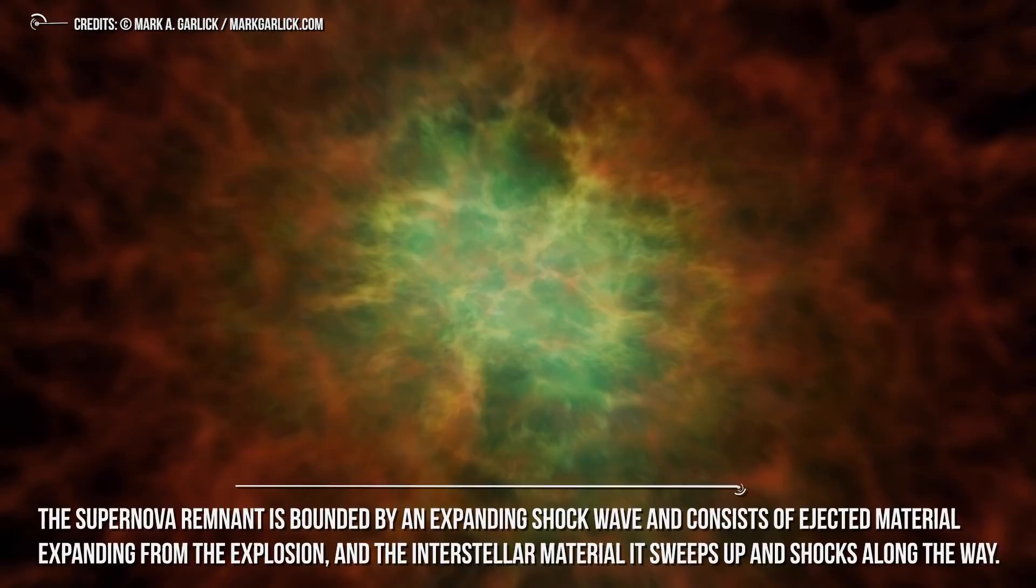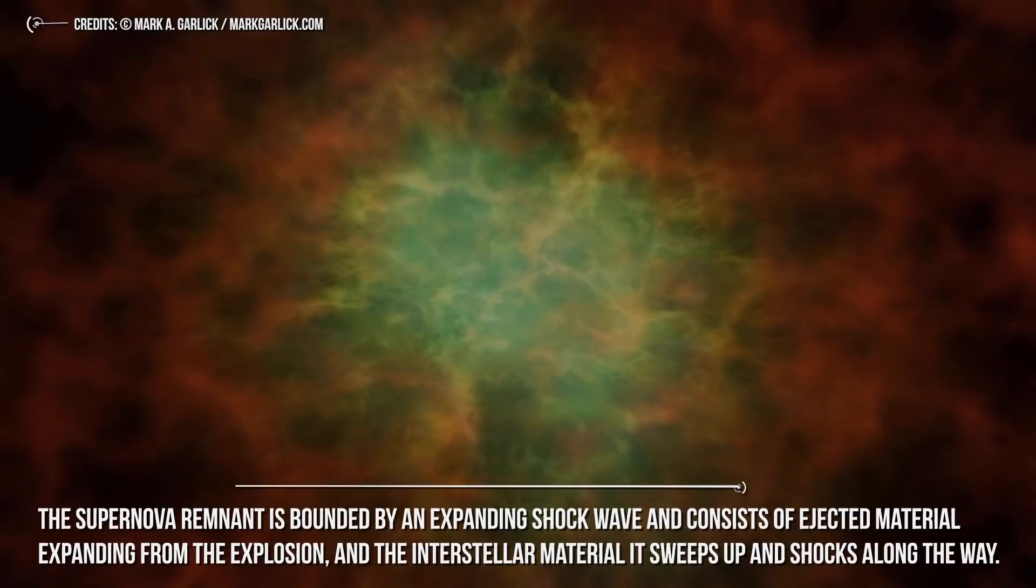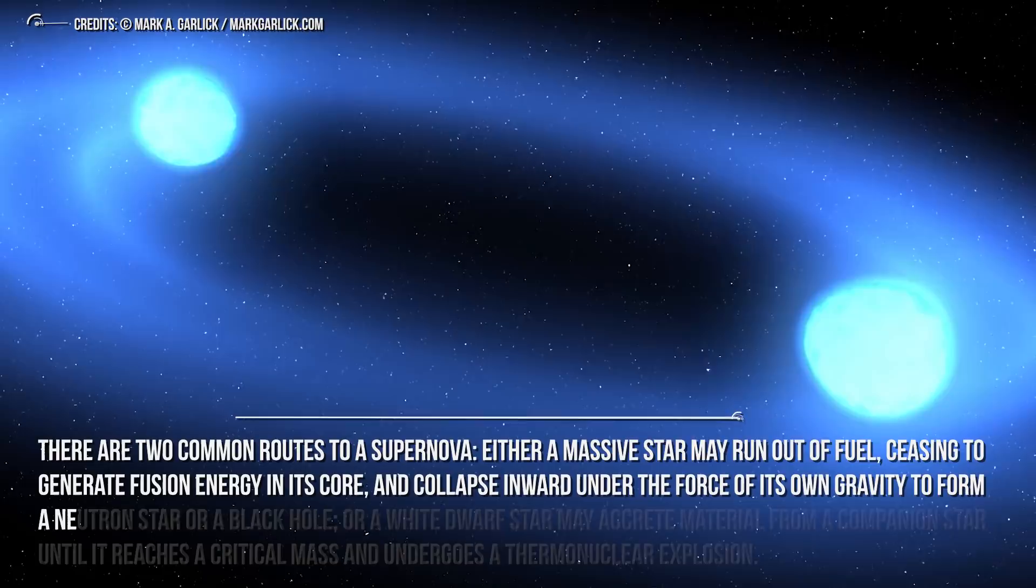What's left after a supernova is called a supernova remnant. The supernova remnant is bounded by an expanding shockwave and consists of ejected material expanding from the explosion and the interstellar material it sweeps up and shocks along the way. There are two common routes to a supernova.